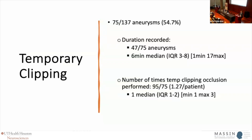As for results, about 55% of cases did actually undergo temporary clipping — so a good number had primary clipping only. In a classic group of six surgeons represented here, this reflects personal preference and the nature of the particular aneurysm. Some of us always clip temporarily and some use it on a more selective basis.